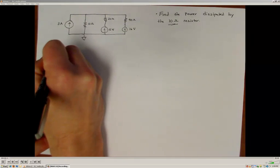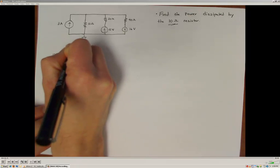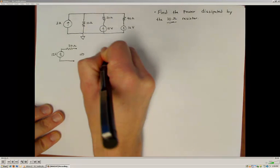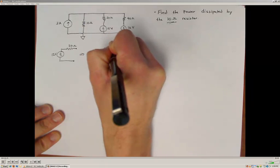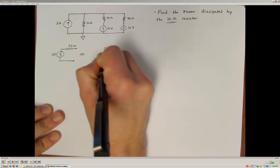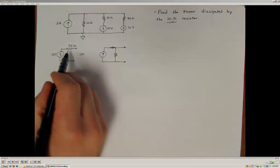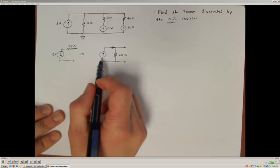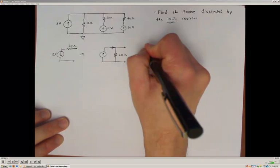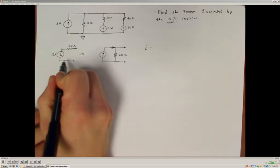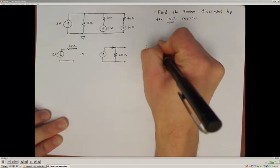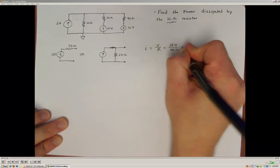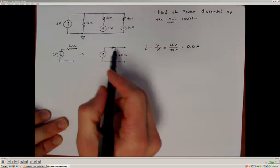Let's look at the 12 volt source first. I have 12 volts in series with 20 ohms of resistance. I know that's equivalent to a current supply with a parallel resistance. The Thevenin and Norton equivalent resistance are the same value, so it remains 20 ohms. To find the current supply value, I use Ohm's law: I = V/R = 12 volts / 20 ohms = 0.6 amps. So this is equivalent to a 0.6 amp supply in parallel with a 20 ohm resistor.